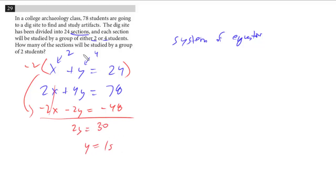So you want to be careful. Y is 15, but we know y is the number of the sections with four, and they're asking for the sections with two, and so we plug it in, we know this y is 15, and so x is 9. That's the answer here.